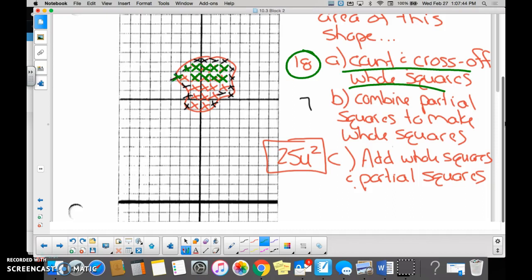And then we took the black X's, so like this one and this one, we said, well, that together makes one. This one and this one together make two. This one and this one together make three and so on. And we found how many would we combine? Seven. If you add those all together, what is the entire area of that funky looking shape? Twenty-five.